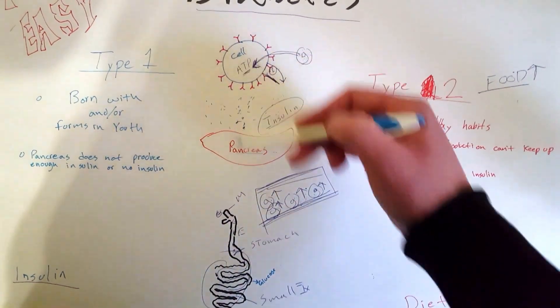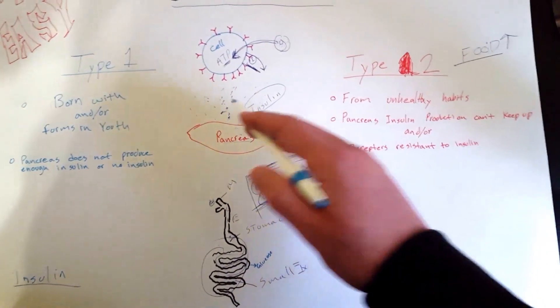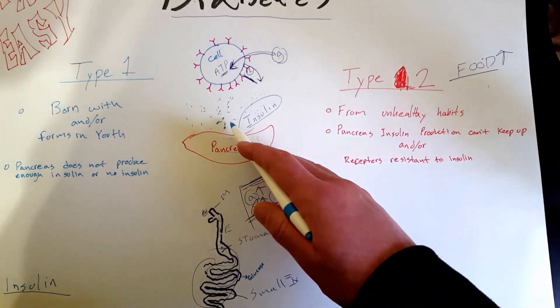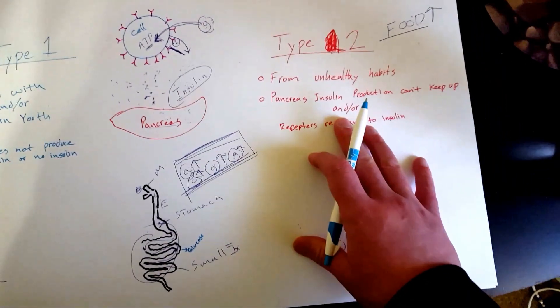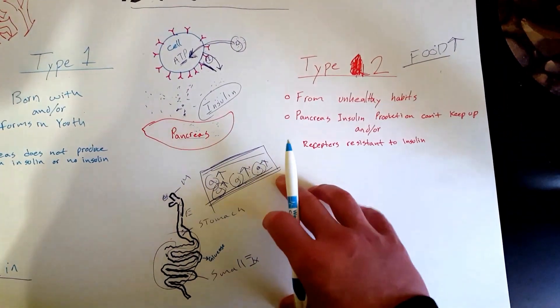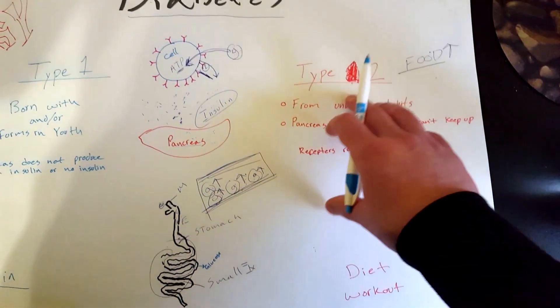Also, what may happen is that your receptors start to resist the insulin because of the overproduction of insulin. It's kind of like you get numb to what you see every day, that same situation.